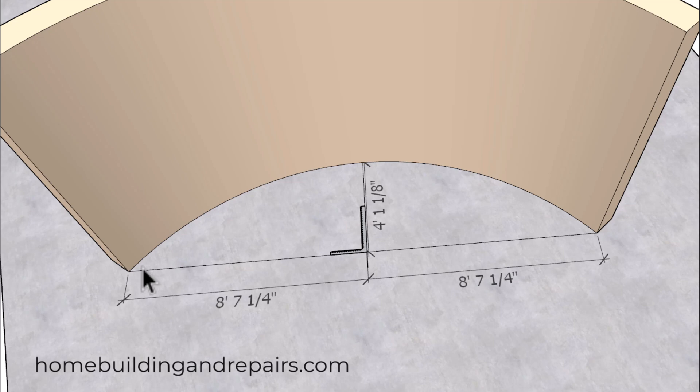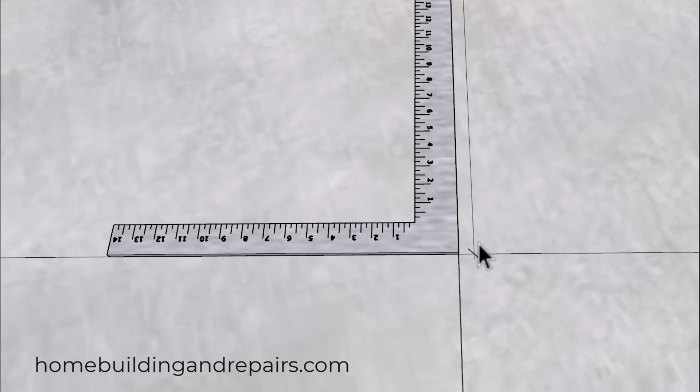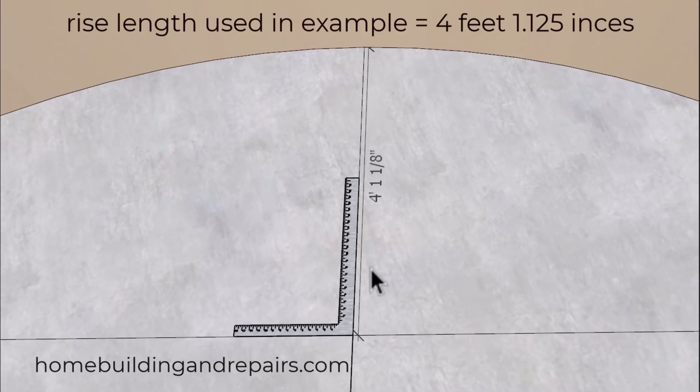Then we're going to divide this number in half and then square off of it at a 90 degree angle. You can use a framing square to draw that line. Simply line one edge up at the center point and the other edge along the straight line, and then draw a line from here to here.